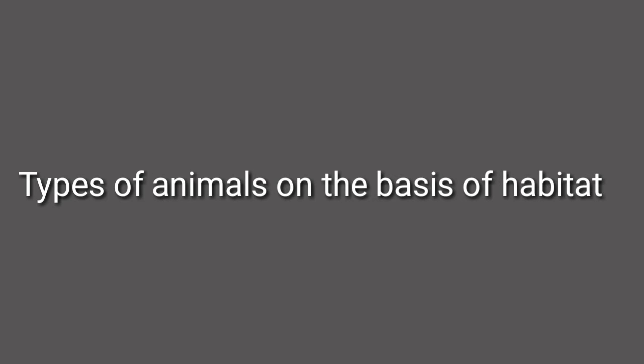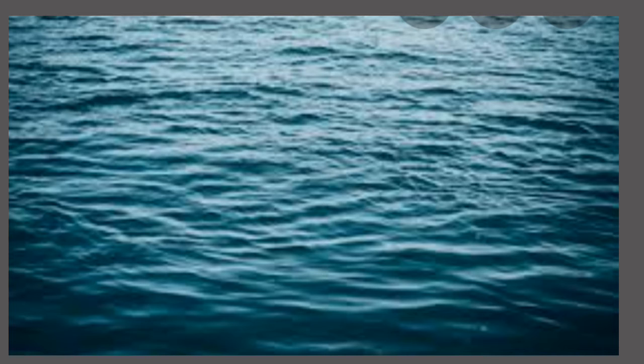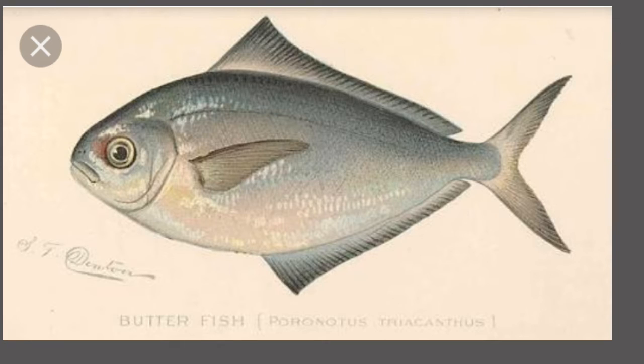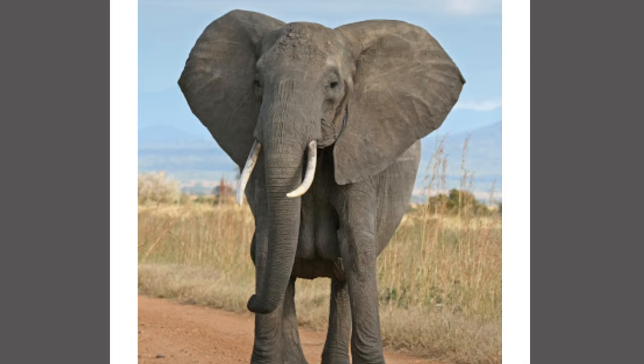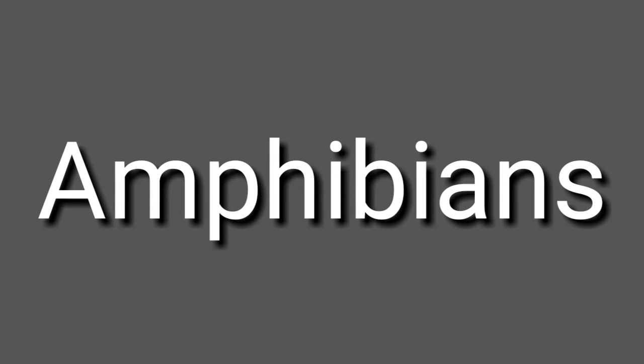The second category is types of animals on the basis of habitat. The first type is aquatic animals — animals which live in water, like fish. The second type is terrestrial animals — animals which live on land, like cows, horses, and elephants.